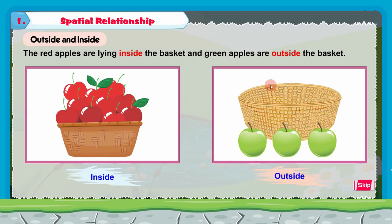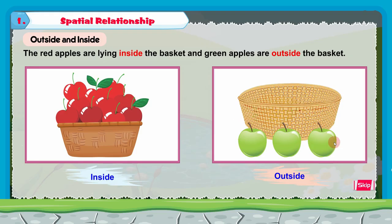Here you can see two pictures. In these pictures, we can find a basket. In the first picture, we can find red apples in the basket — the apples are inside the basket. I-N-S-I-D-E inside. In the second picture, this is the basket and these are the green apples, but the green apples are outside the basket. You can see the basket is empty and the apples are outside the basket.